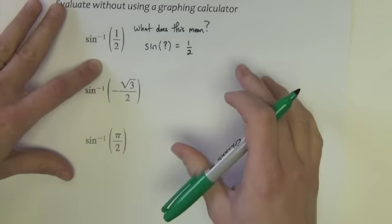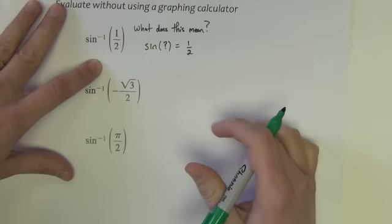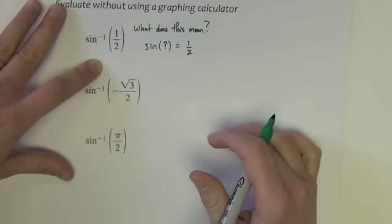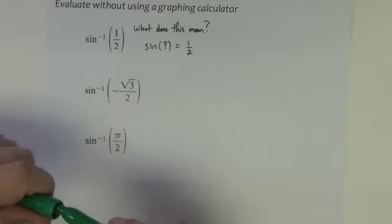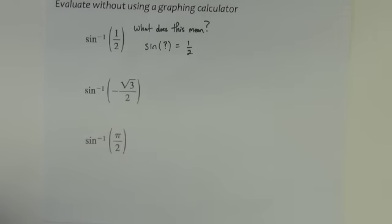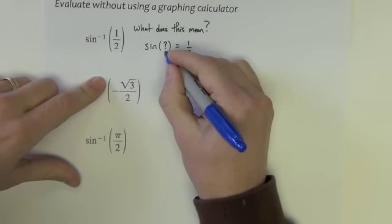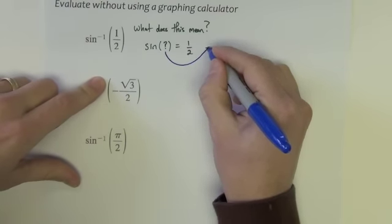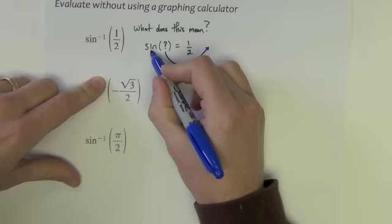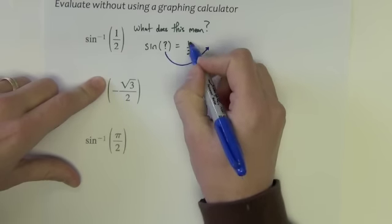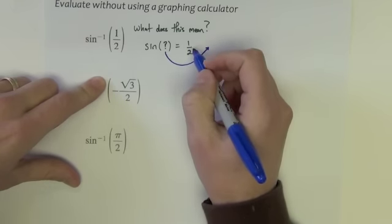Okay, so it's like evaluating off of the unit circle, but evaluating off the unit circle in reverse. So I have to think sine. Sine is the y coordinates of all the points. I have to think at what places on the unit circle, at what angles on the unit circle, do I find y values of 1 half?